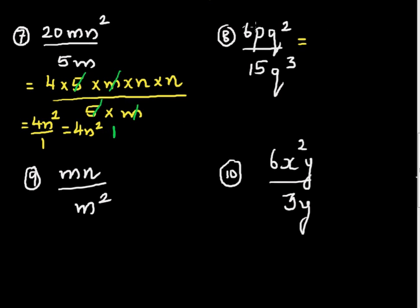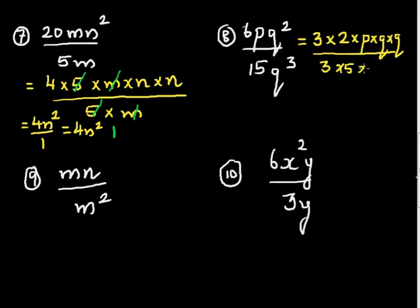For 6pq squared divided by 15q cubed: write 6 and 15 as 3 times 2 times p times q times q divided by 3 times 5 times q times q times q. The 3s cancel and two q's cancel. What remains is 2p on top divided by 5q.